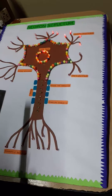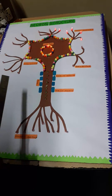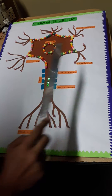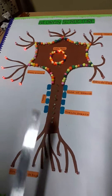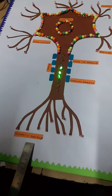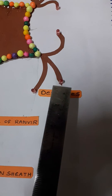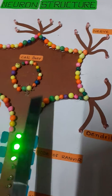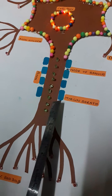This project is about neuron structure, which is the structural unit of the nervous system. A neuron has many parts such as dendrites, cell body, axon, synaptic end bulbs, and nodes of Ranvier. The dendrites receive information from the nerve endings, which then goes into the cell body, from where it gets transmitted through the axon as electrical impulses.